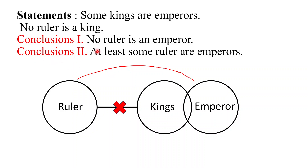The second conclusion says at least some rulers are emperors. You can see that there is no direct relation between ruler and emperor. So conclusion one will be wrong and conclusion two will also be wrong because there is no direct relation between ruler and emperor. The first condition for either or was both conclusions must be wrong individually — conclusion one is wrong and conclusion two is wrong.